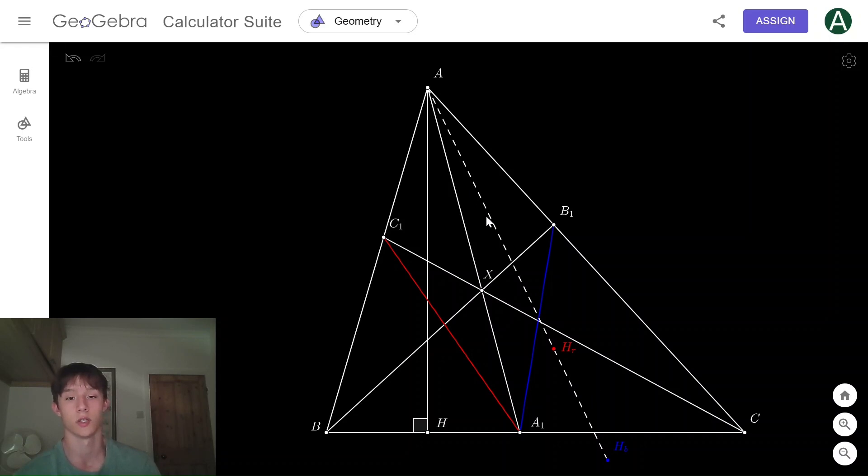You want to show that A, Hr, and Hb are collinear. As you know, I'm a firm believer in the good point bad point method. If you didn't watch my videos on this method yet, please do so. I think it's the best geometry video on YouTube right now.